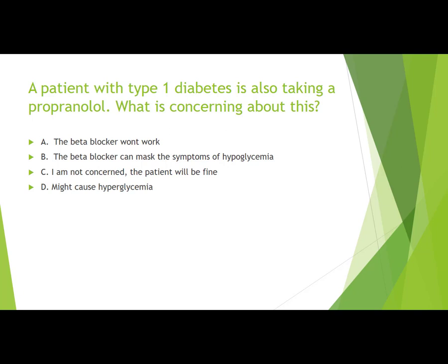Case 2: A patient with type 1 diabetes is also taking propranolol, a beta blocker. What is concerning? The answer is that the beta blocker can mask the symptoms of hypoglycemia. Hypoglycemia causes sympathetic nervous activation, producing increased heart rate and palpitations, but beta blockers decrease heart rate, masking these warning signs.